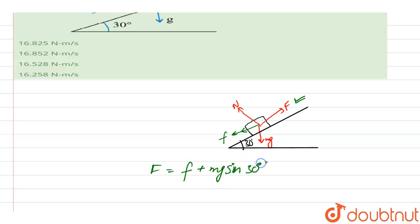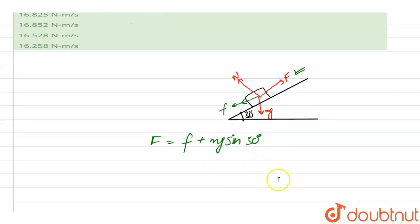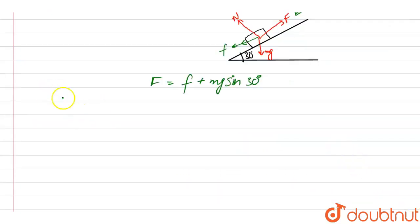It will be F equals small f plus mg sin 30 degrees. Now, as we all know, the force of friction will be equal to mu times N.